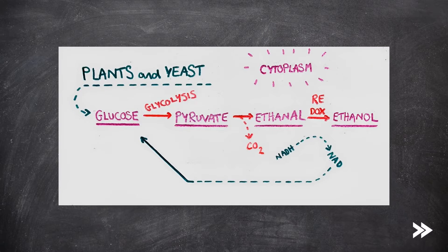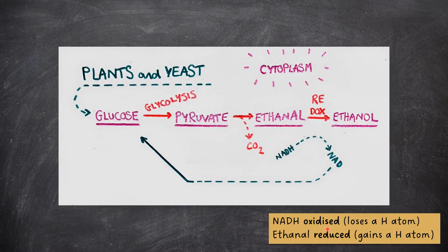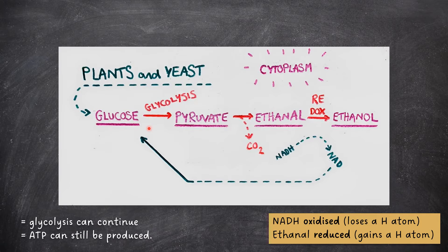In plants and yeast, we have a similar principle. First, pyruvate is converted to ethanol. We produce CO2 in the process, and then the ethanol is converted to ethanol in, again, a redox reaction that converts NADH to NAD. As before, it is the NADH that is oxidized, and ethanol is reduced. As in animals, the NAD is then fed back into glycolysis, so that glycolysis can continue and ATP can still be produced.